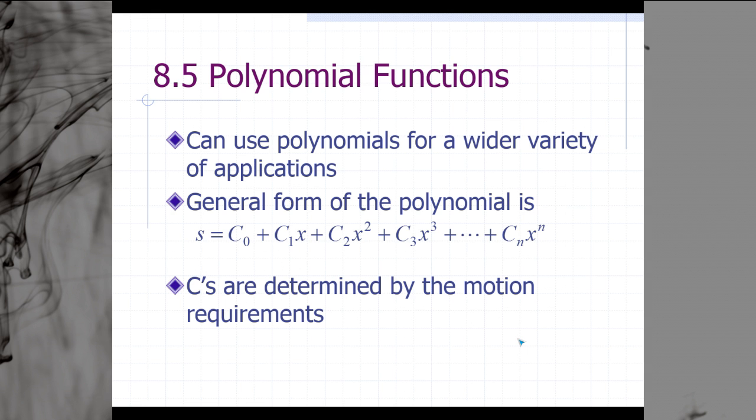Now we will discuss polynomial functions and how they can be used in CAM design. We can use polynomials for a wider variety of applications. The general form of a polynomial is as follows, where we have s, again equal to our position of the follower, equal to c0 plus c1 times x plus c2 x squared plus c3 x cubed, and this pattern continues until we get to cn x to the n. These c's that we see in the position equation are determined by the motion requirements for our CAM design.